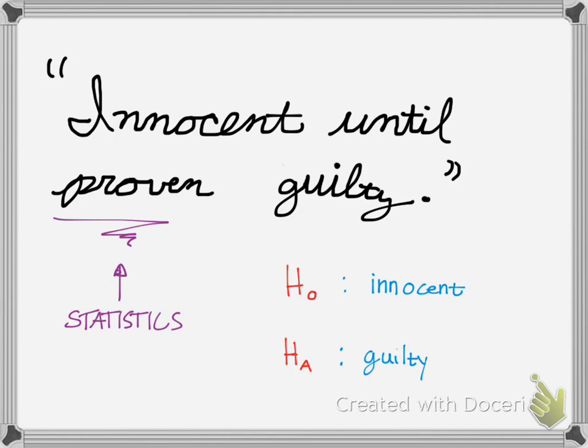If you flip this and said guilty until proven innocent, then you would say, oh, we automatically assume that you committed the crime, but now you have to provide proof that you didn't. That would totally flip the legal system around. Same with hypothesis testing. Think of it that you're automatically innocent, there is no change. Guilty means that there is a change, and that you can compare with the hypothesis here.